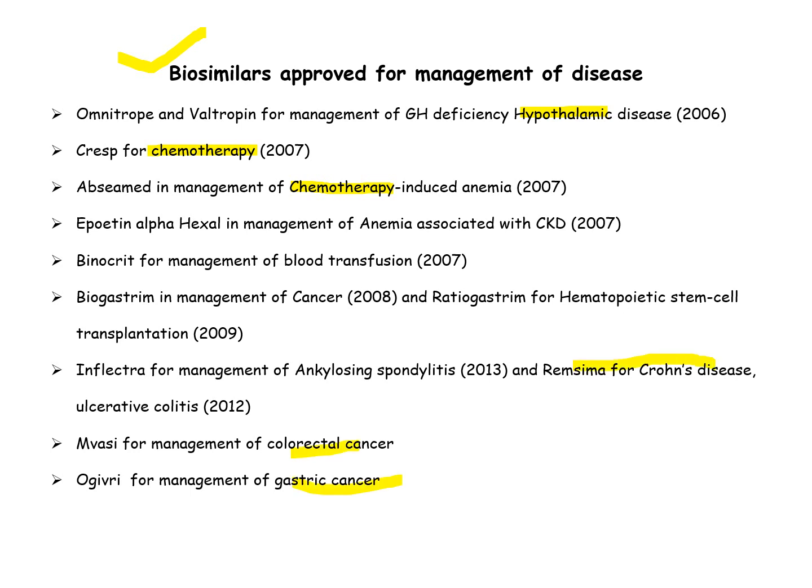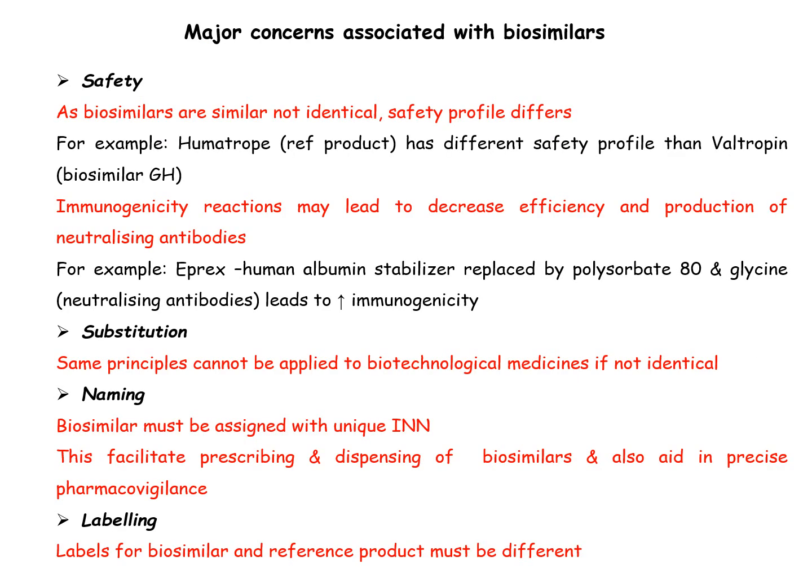On this slide, some biosimilars approved for the management of several diseases are listed. Most focus is given to chemotherapy, hormonal or hypothalamic disorders, and various types of cancers. Crohn's disease and ulcerative colitis are also among the diseases for which biosimilars are used.